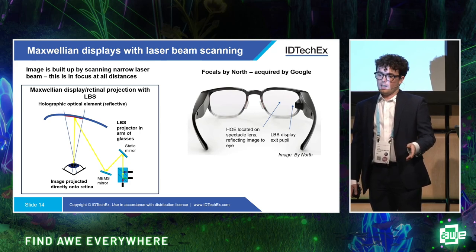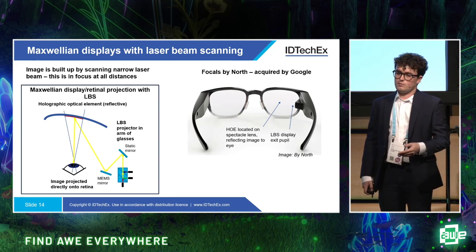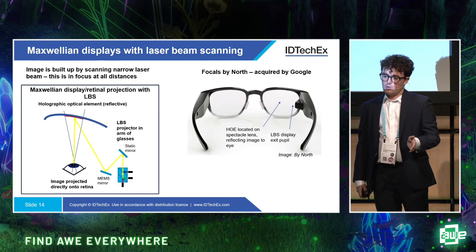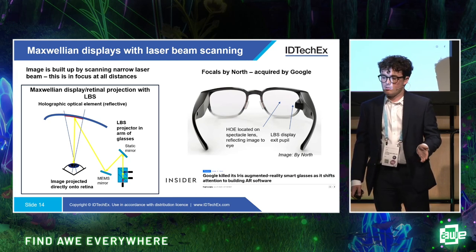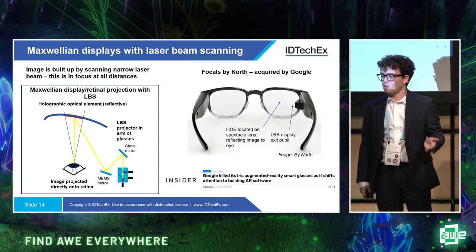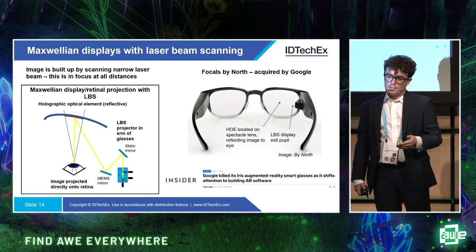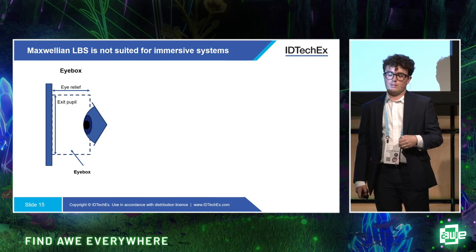These display systems are commonly used with a holographic optical element reflector to keep the system compact. One of the more famous commercial examples was Focals by North, which was acquired by Google. Google's Project Iris AR glasses program looked to use the same technology, although there are indications that project may be on hold. Maxwellian LBS is excellent for utility use cases like mapping and translation, but there's a significant issue with eye box — the area in which you can place your eye and comfortably perceive an image.